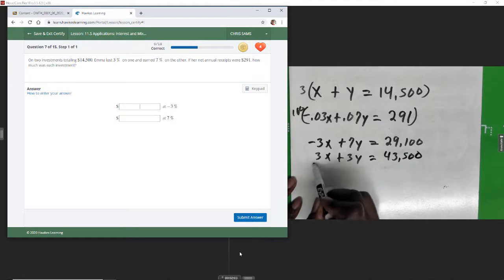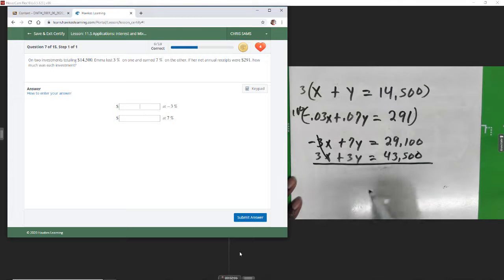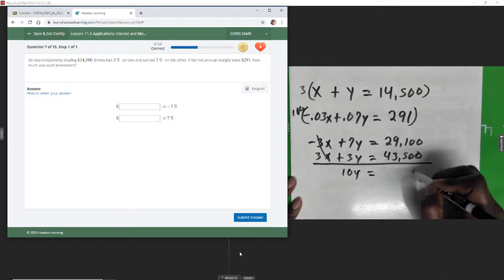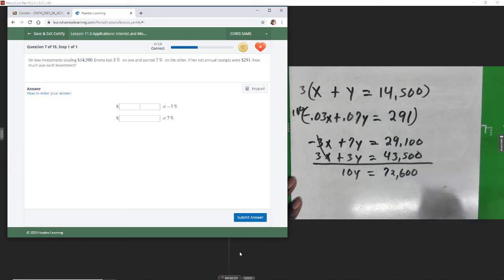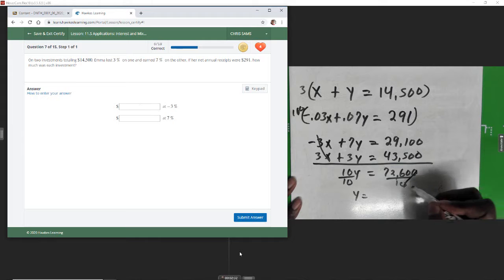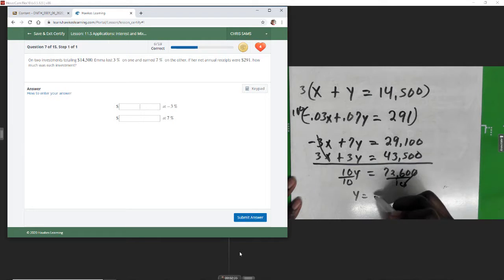Alright, add these two together. X gets eliminated, we get 10y equals zero zero six, carry one, and we get $72,600. Divide by 10 and we get y equals, cut off a zero. Basically what happens here, we get $7,260. So $7,260.